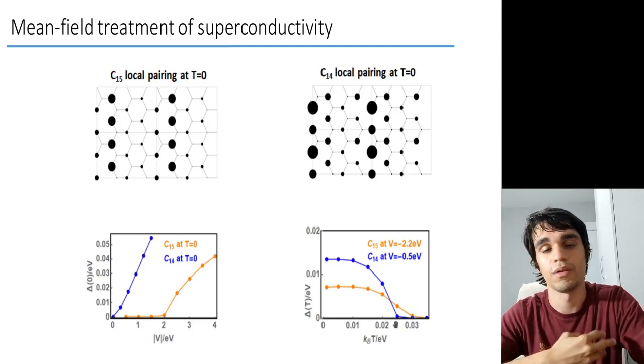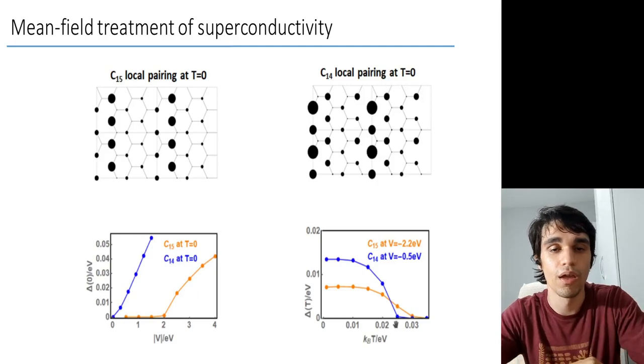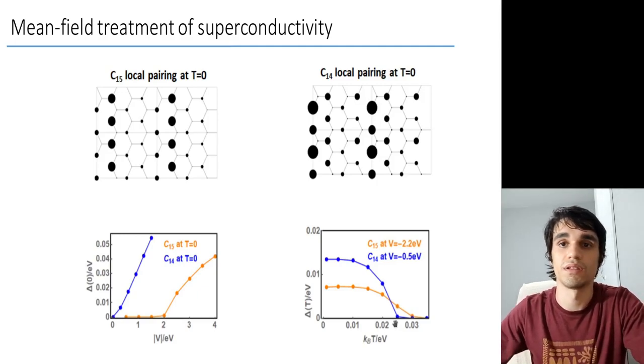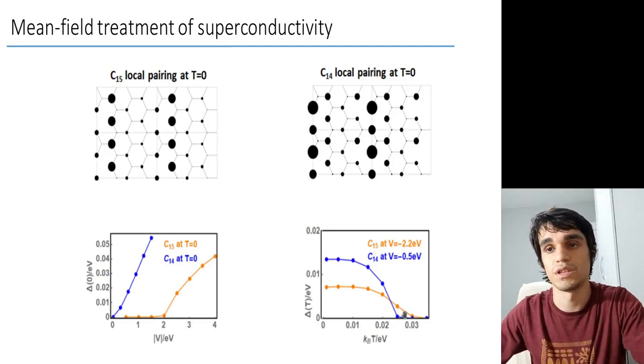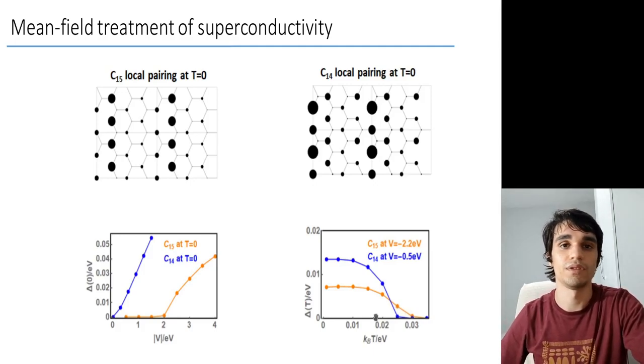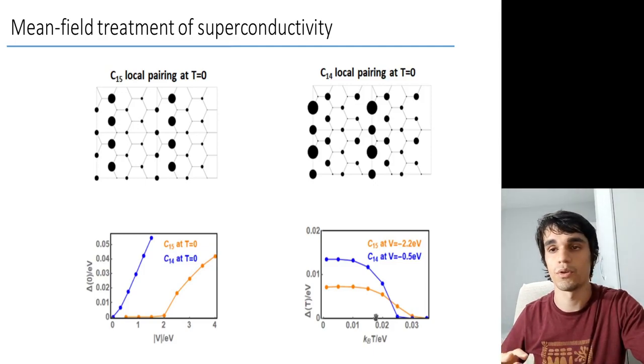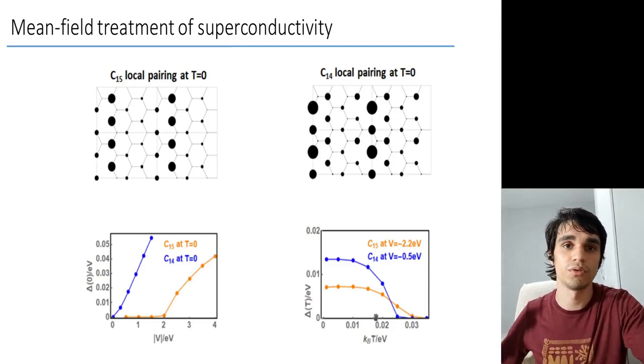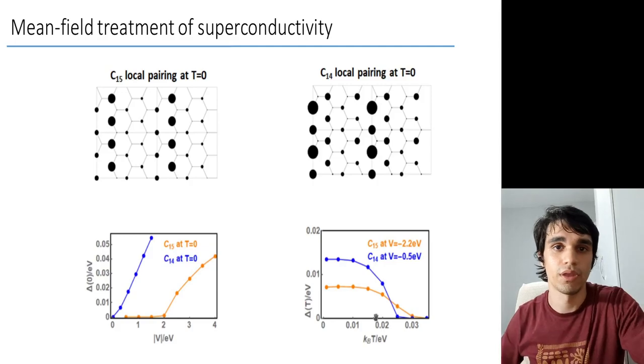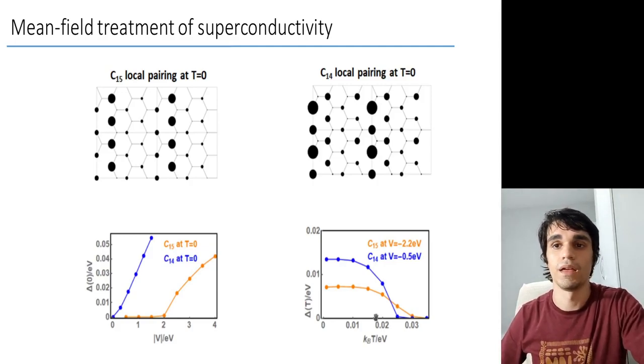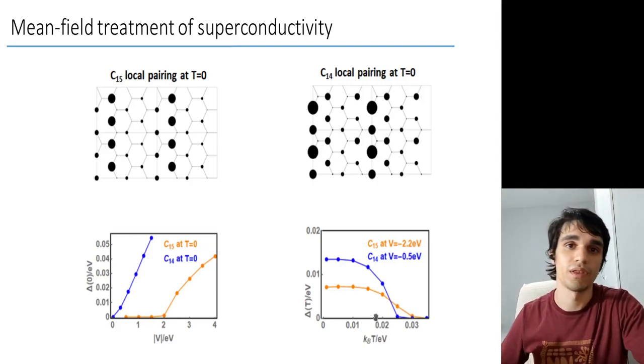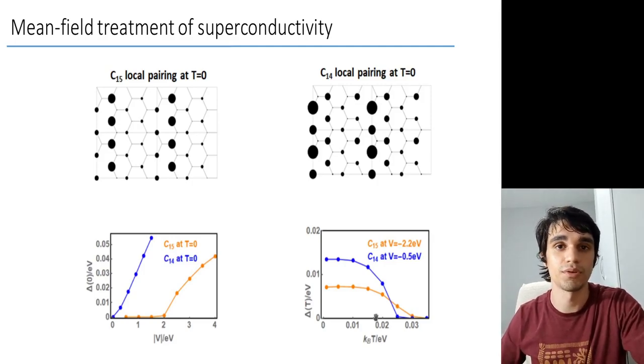Moreover, we observed that if you have more narrow bands, this critical temperature is bigger. And so you can have this situation where you have a vacancy engineering configuration with a very enlarged unit cell and a lot of narrow bands with a much higher critical temperature.